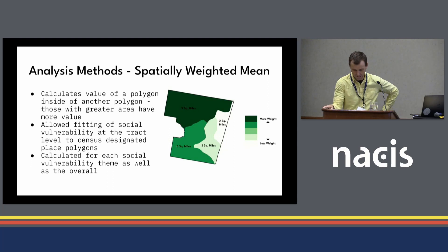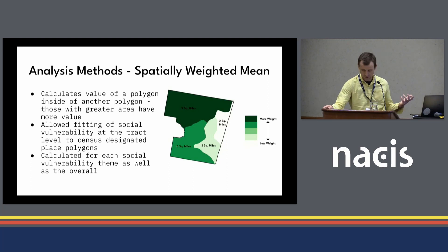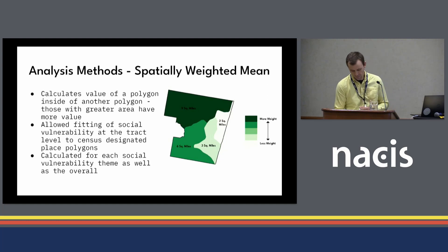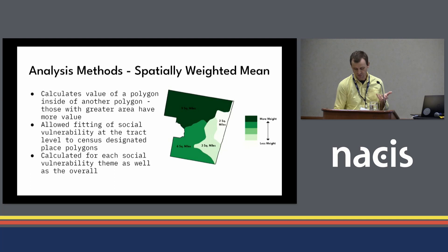The second analysis I performed was a spatially weighted mean. This process calculates the value of a polygon inside another polygon and gives those that consume more area greater importance or weight. This is used because CDPs — the census-designated places — are the minimum mapping unit displayed in the map, and the social vulnerability index data was at the tract level, which is too detailed for the study. I needed a way to generalize the social vulnerability while ensuring the attributes continue to accurately represent that attribute.